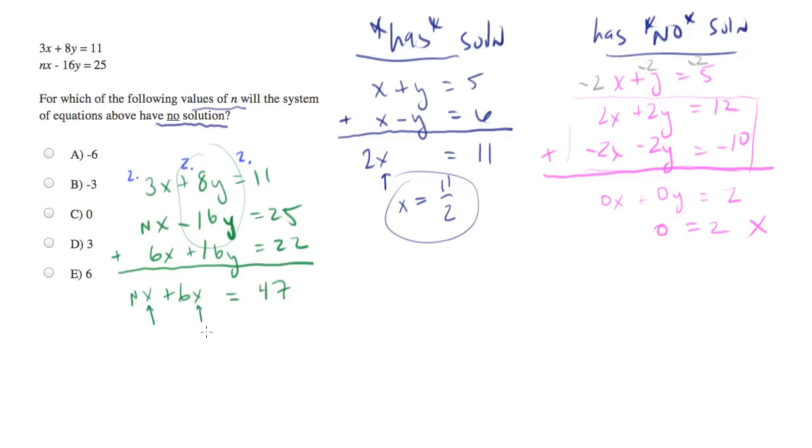If we're left with a variable, we're not going to be able to create a no solution situation. So we need for this term here to cancel out and go to 0. So let's factor the x out, and we actually end up with n plus 6 times x equals 47.